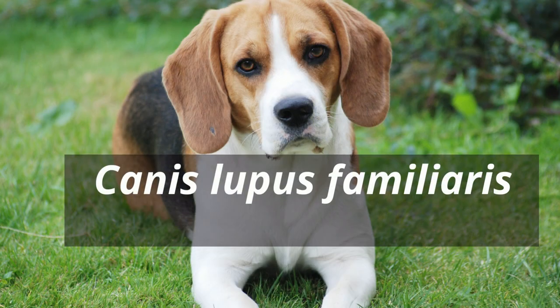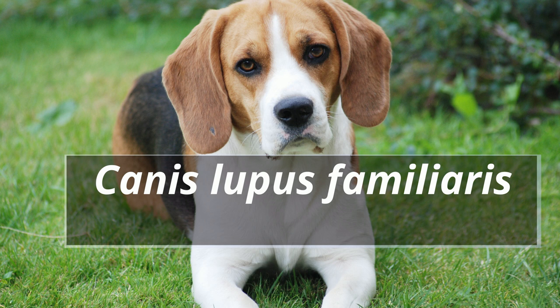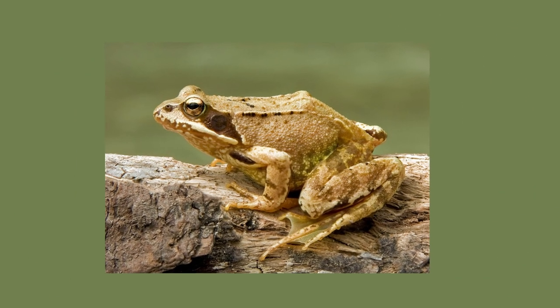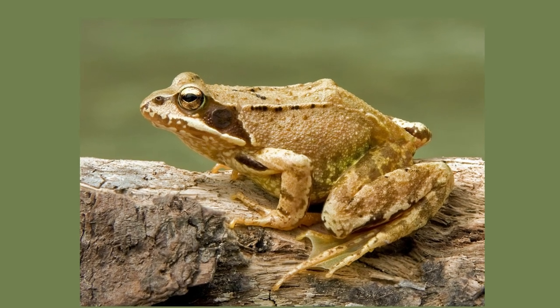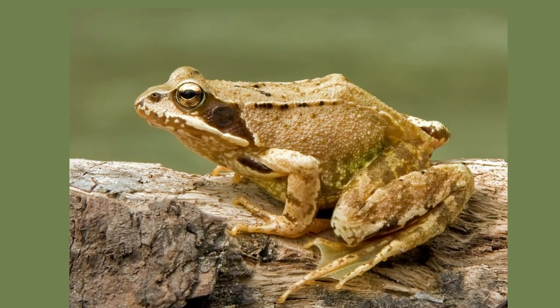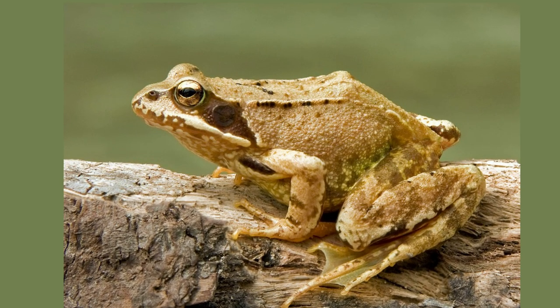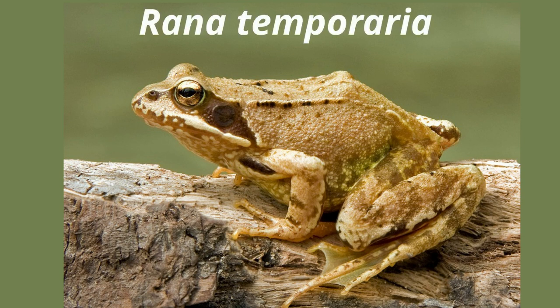A dog's scientific name is Canis lupus familiaris. The genus is Canis and the species is lupus familiaris. How about this frog? There are over 5,000 types of frogs, so the scientific name tells you exactly which one you are talking about. The scientific name for this frog is Rana temporia — genus Rana, species temporia.